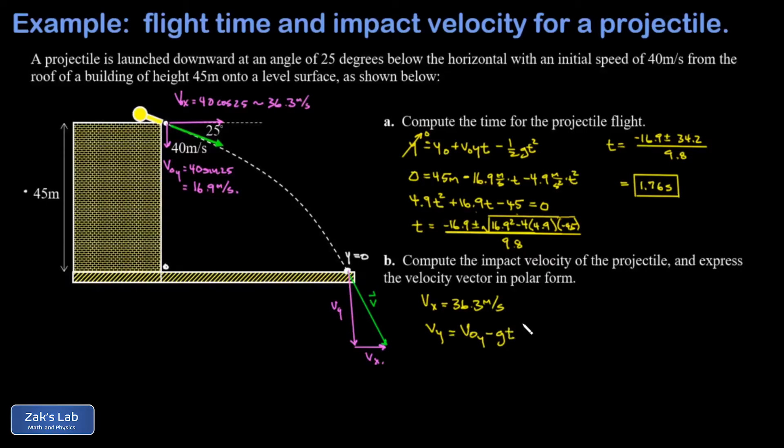Plugging in negative g for the acceleration, and our initial again we need a minus sign on that with 16.9 meters per second downward, and then I have a minus 9.8 times t where t is the flight time, and that's 1.76. When I run the numbers on this I get a final y velocity of negative 34.1 meters per second.